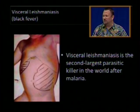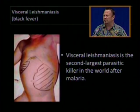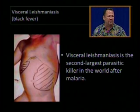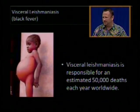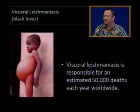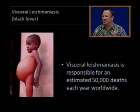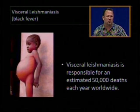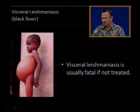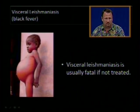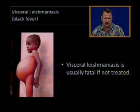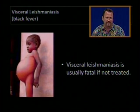Visceral leishmaniasis is the second largest parasitic killer in the world after malaria, responsible for an estimated 50,000 deaths each year worldwide, and is usually fatal if not treated.